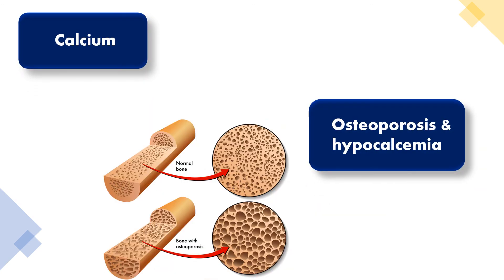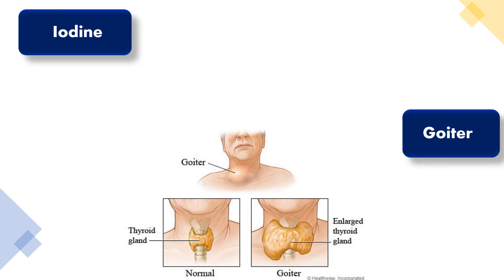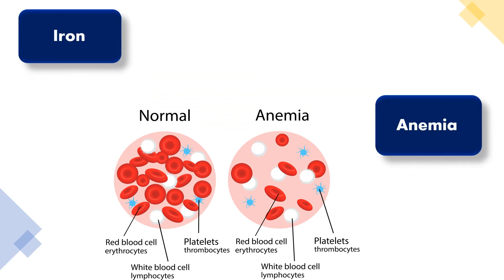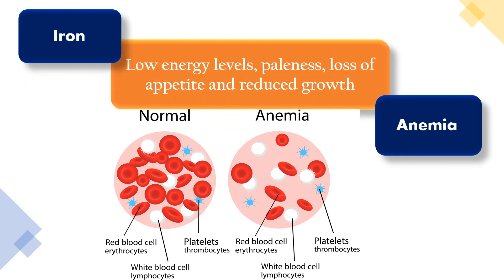Osteoporosis and hypocalcemia are caused due to lack of calcium; symptoms are bone and teeth decay. Goiter is caused due to lack of iodine; symptoms are swelling of the thyroid gland, poor growth in infancy, and mental retardation. Anemia is caused due to lack of iron; symptoms are low energy levels, paleness, loss of appetite, and reduced growth.